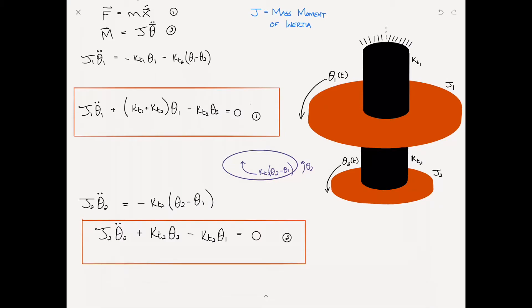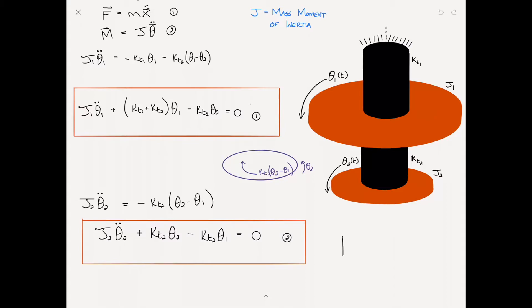This system is completely analogous to the system we looked at in the previous problem, where we had two masses attached by a spring and then a second spring to the wall. You shouldn't be surprised to find that the equations of motion in form are identical to that of the previous video — the J's are replaced by M's and the KT's are replaced by K1 and K2 respectively.